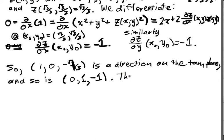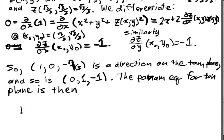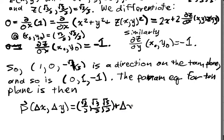So, in particular, the parametric equation for the tangent plane is then p(Δx, Δy) is equal to a point, which is already given to us. When I change x, I move in this direction in the tangent plane. And when I change y, I move in this direction in the tangent plane. That's great.